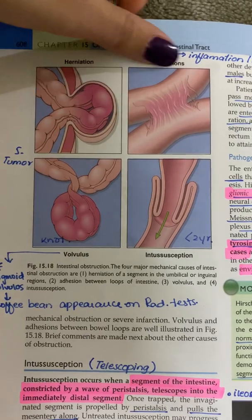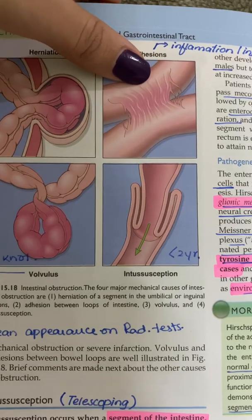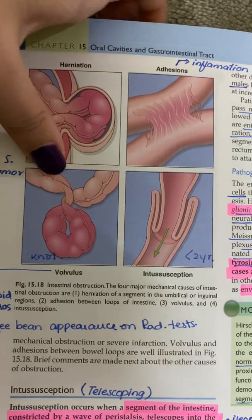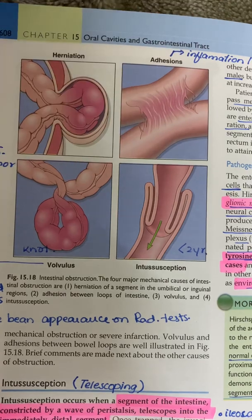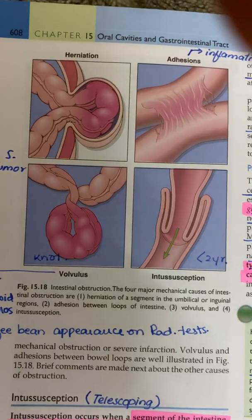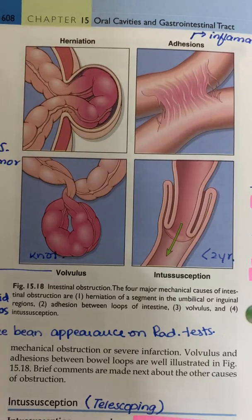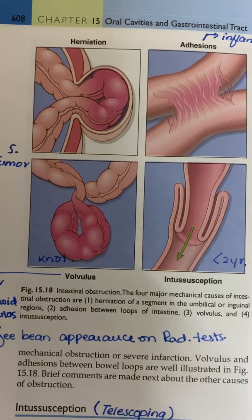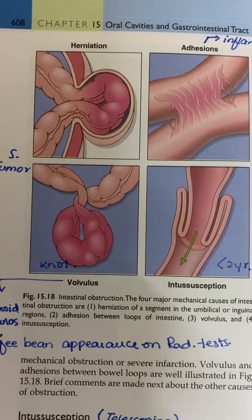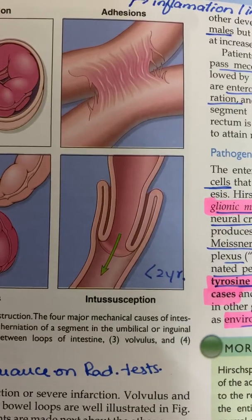Some of the mechanical problems include hernias, in which a hernial sac is formed with a narrow neck. There may be adhesions associated with inflammation or injuries. In volvulus, a knot is formed of the bowel segments, and if this knot is present in the sigmoidal region, it will show a coffee bean appearance on radiological examination.